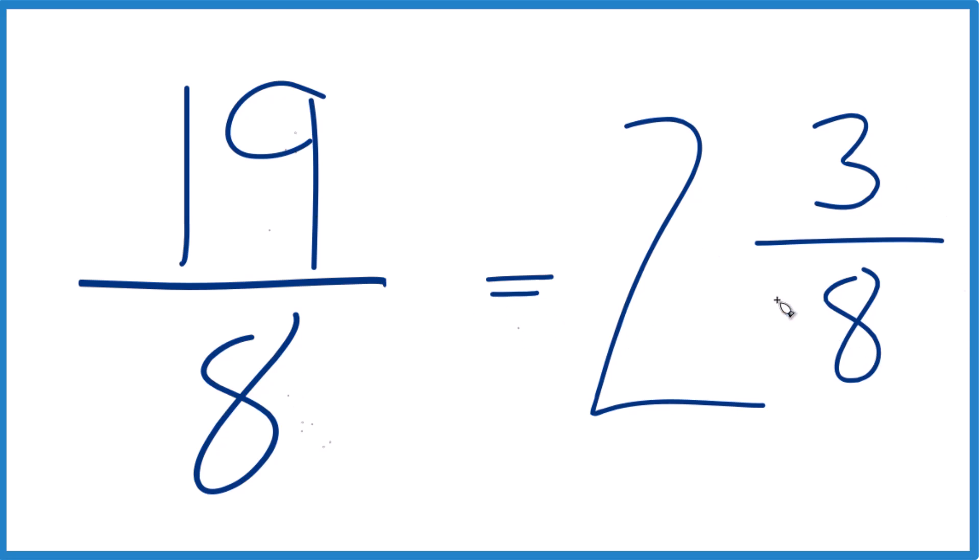We could check that too. 2 times 8 is 16, 16 plus 3, that's the 19, and then we keep the denominator the same.